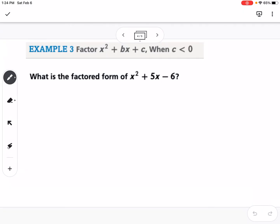Okay, example 3. What is the factored form of x squared plus 5x minus 6? This is going to look like example 1, but it's a little different with the signs. So this time, I need to find factors of negative 6.